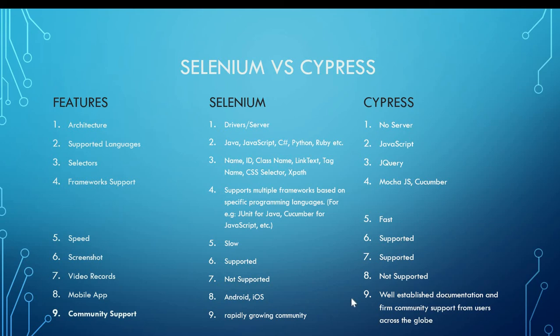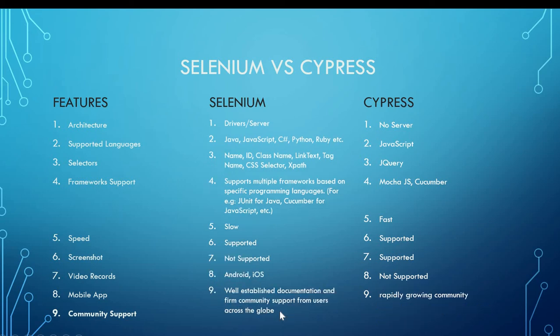Number nine: Community support. Selenium has very strong community support — it's been in the market for a decade with well-established documentation and a firm community from users across the globe. Cypress is just growing — it's called next-generation automation. Its community is growing rapidly, with lots of new documentation and resources appearing every day.